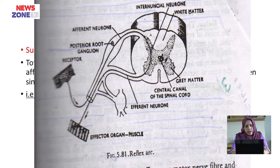The afferent nerve carries the impulse to the center of the reflex arc, where the synapse occurs, and the efferent neuron arises to reach the effector organ.